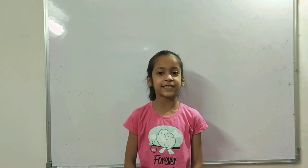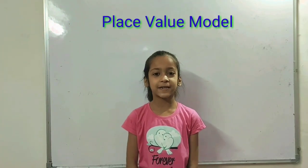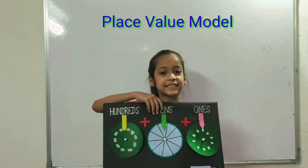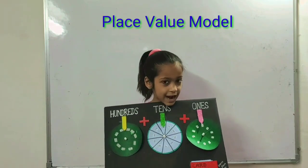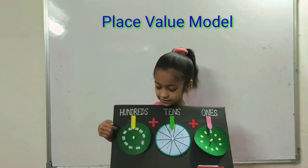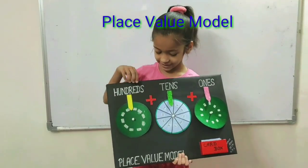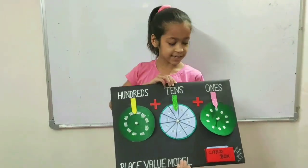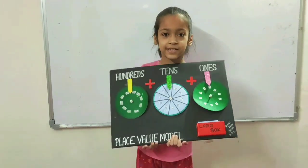Hello friends, I am Shivi. I have made a place value chart as you can see. Here's the card box and here are some wheels. This is the 100th wheel, this is the 10th wheel, and this is the 1st wheel.